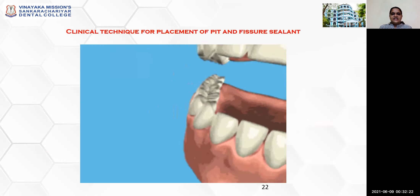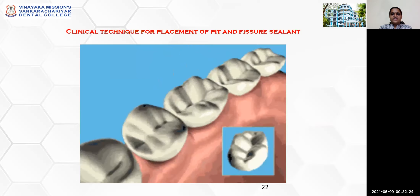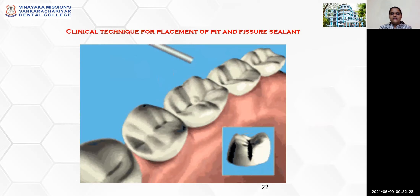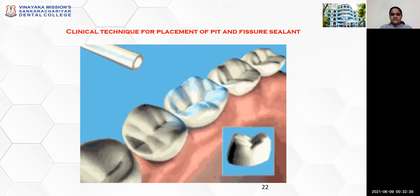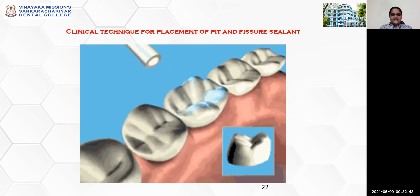This is the clinical technique for the placement of pit and fissure sealants, illustrated with a simple video of a flowable sealant. First, the sealant is placed into the deep occlusal surfaces. Then it is light cured, and thereby the sealant is set.